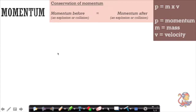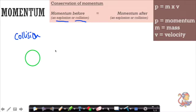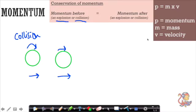Now momentum starts to get a little more complicated with the idea of conservation of momentum, where momentum before an event is the same as momentum after. Those events can be things like explosions or collisions. For example, imagine two balls rolling along the floor in the same direction — because they have a mass and a velocity, they have momentum.